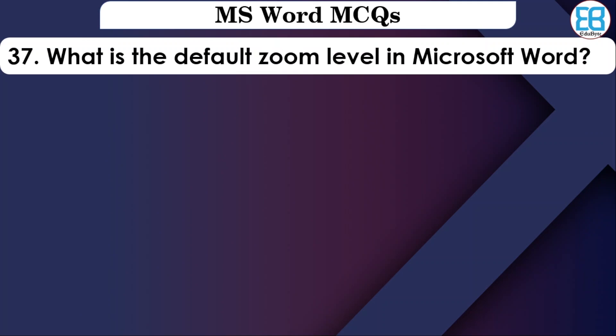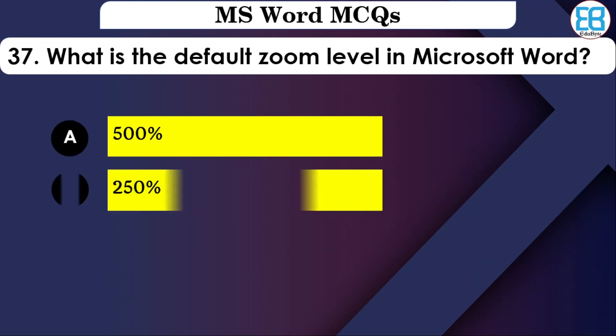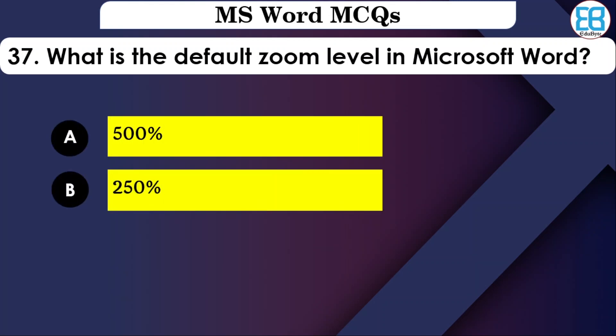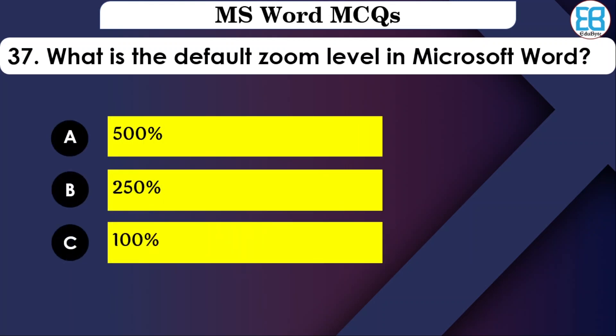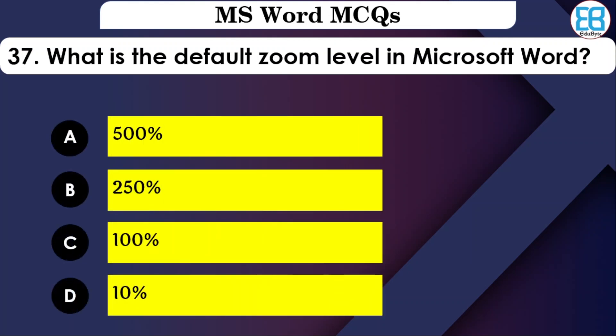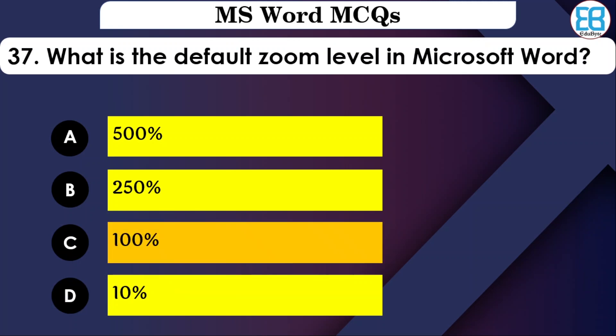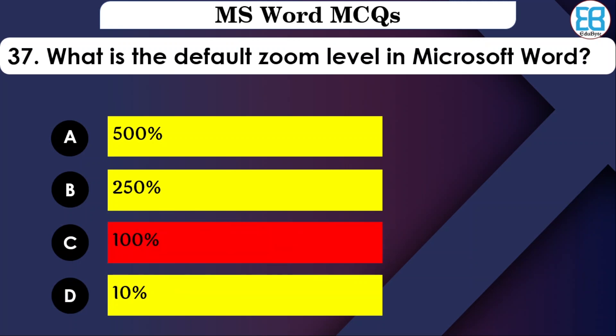What is the default zoom level in MS Word? The options are: 500%, 250%, 100%, or 10%. The correct option is 100% — the default zoom level in MS Word is 100%.